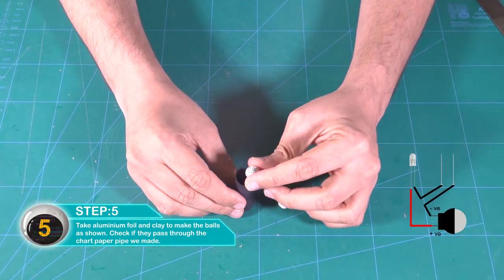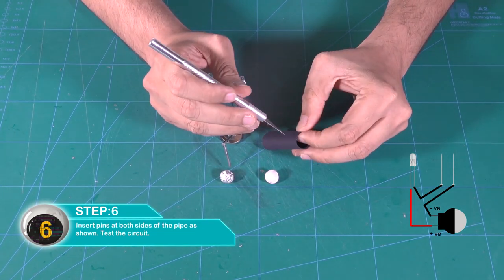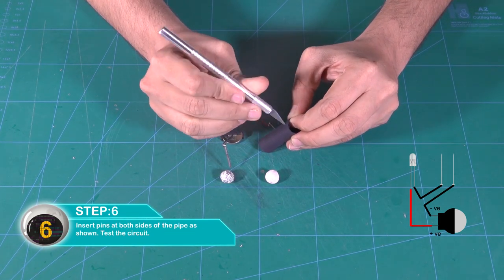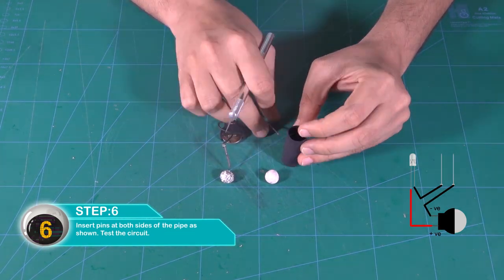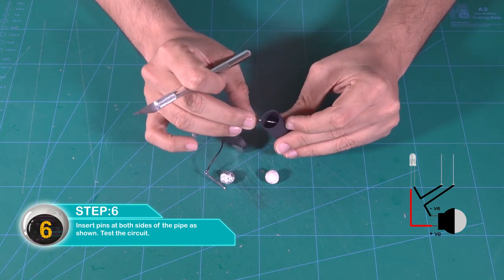Check if they pass through the chart paper pipe we made. Insert pins at both sides of the pipe as shown. Test the circuit.